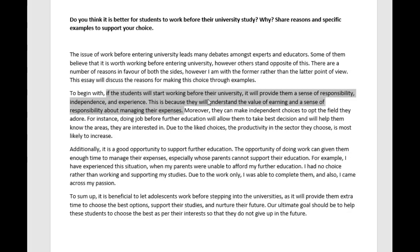You need to support each idea right after what you're actually describing, so reorganize accordingly. The conclusion reads: 'To sum up, it is beneficial to let adolescents work before stepping into university, as it will provide them extra time to choose the best options, support their studies, and nurture their future. Our ultimate goal should be to help these students choose the best as per their interest so that they will not give up in the future.' That's fine. You had some nice ideas and good elements, but you lost coherence in the middle. Reorganize those paragraphs more appropriately, correct the issues, and let's see more work from you. Good luck.